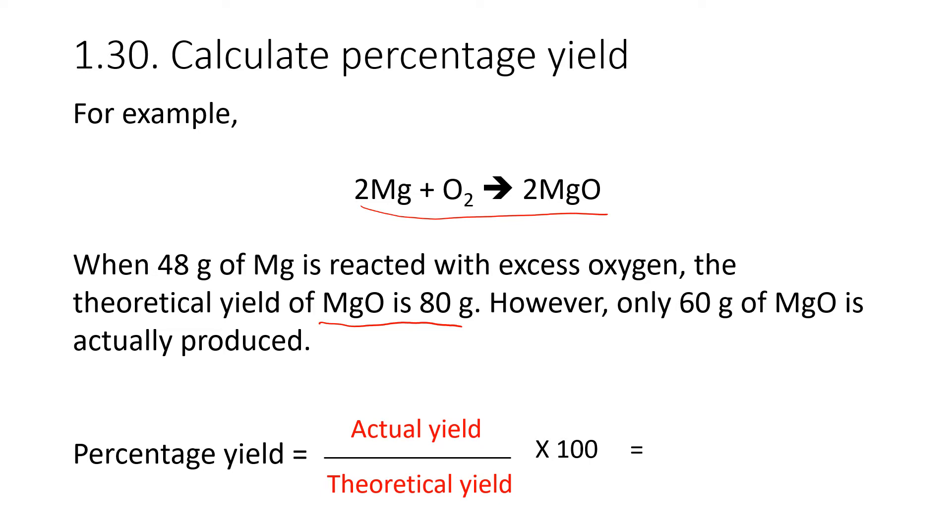However, when we actually do it, we only get 60 grams of magnesium oxide. So to calculate a percentage yield, we figure out what the theoretical yield and the actual yields are, and we calculate the percentage. We take the actual, which is 60, divide that by 80 and times it by 100, which is 75%.